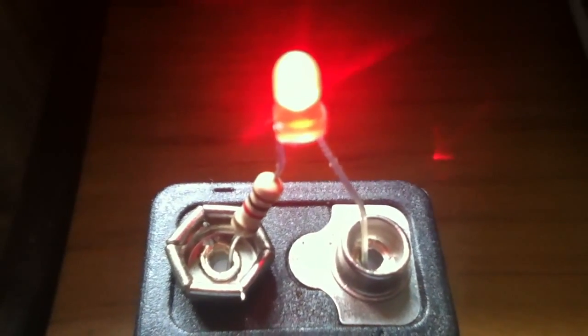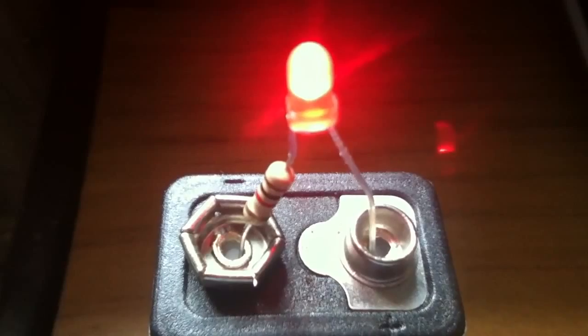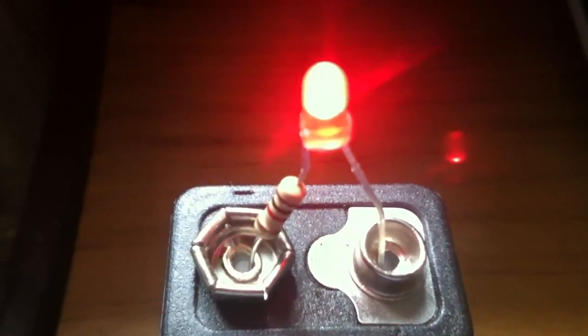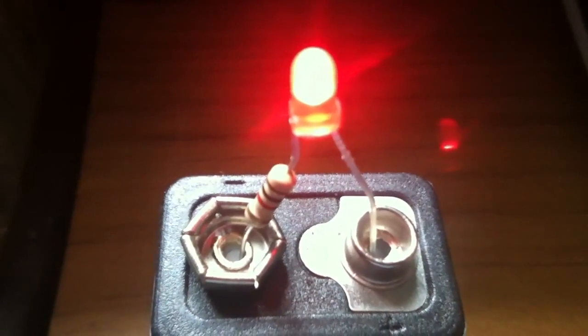But isn't the maths for working out resistor values quite complicated? Well it's not too bad, but there is a way you can cheat. Just play safe and use a 1K.